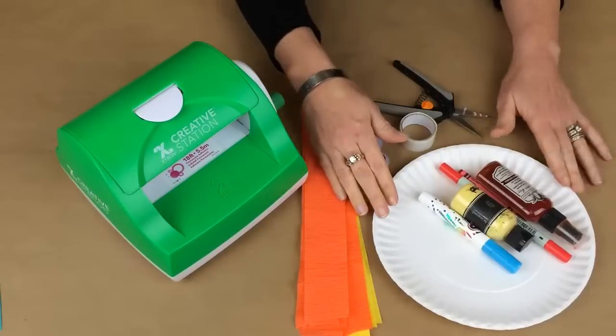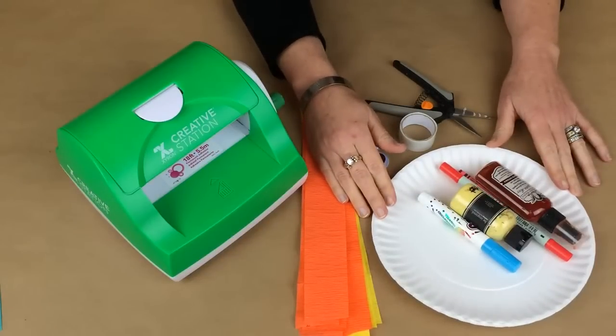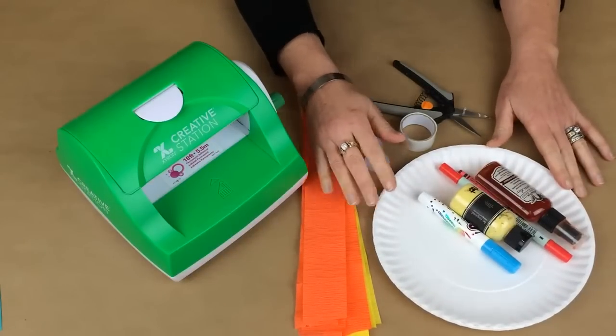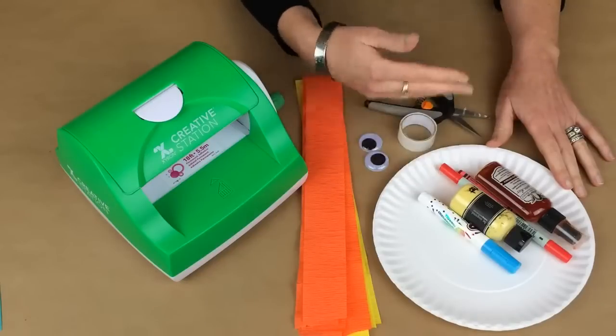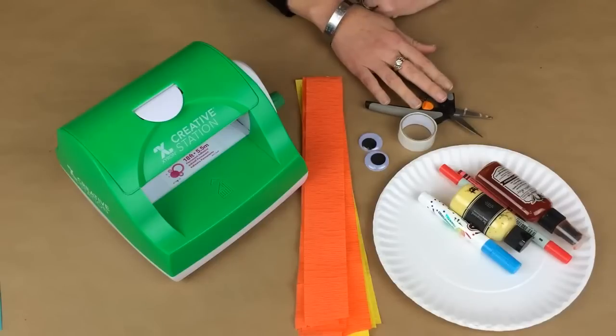The things you're going to need are some regular cheap paper plates, something to color the plates with - crayons, paint, colored pencils, ink, mists, markers, whatever you need - a pair of scissors, and several strips of crepe paper.